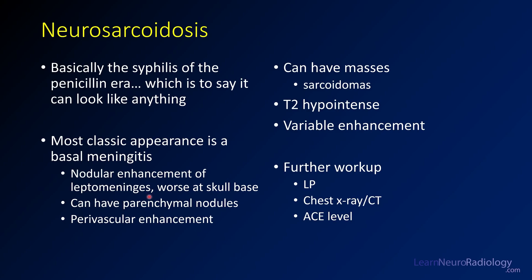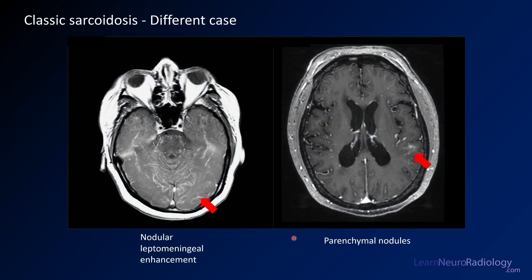The most classic appearance of CNS sarcoidosis is basilar meningitis with nodular leptomeningeal enhancement centered around the skull base. You can have parenchymal nodules, perivascular enhancement in the periventricular white matter, and sarcoidomas that tend to be T2 hypo-intense with enhancement. To work up these patients, get a lumbar puncture, check ACE levels, and obtain a chest X-ray and CT, as the vast majority will have thoracic sarcoidosis manifestations.